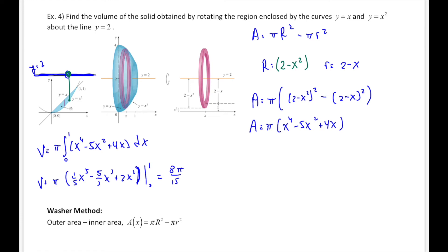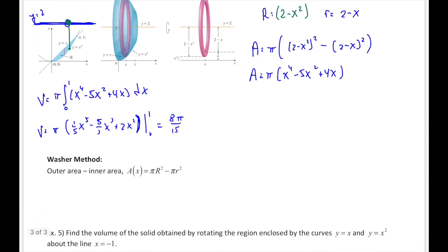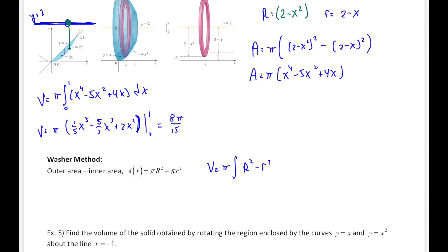So we have the washer method when we have an axis of rotation and we're looking at the area between two curves rotated around something. The area of that washer is always the outer radius squared times π subtract the inner radius squared times π. Our volume is always π times (outer radius squared minus inner radius squared) dx, or whatever our variable of integration is.